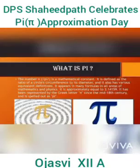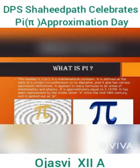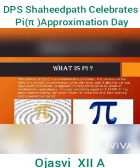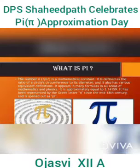The number pi is a mathematical constant. It is defined as the ratio of a circle's circumference to its diameter, and it also has various equivalent definitions. It appears in many formulas in all areas of mathematics and physics. It is approximately equal to 3.14159. It has been represented by the Greek letter since the mid-18th century and is spelled out as pi.